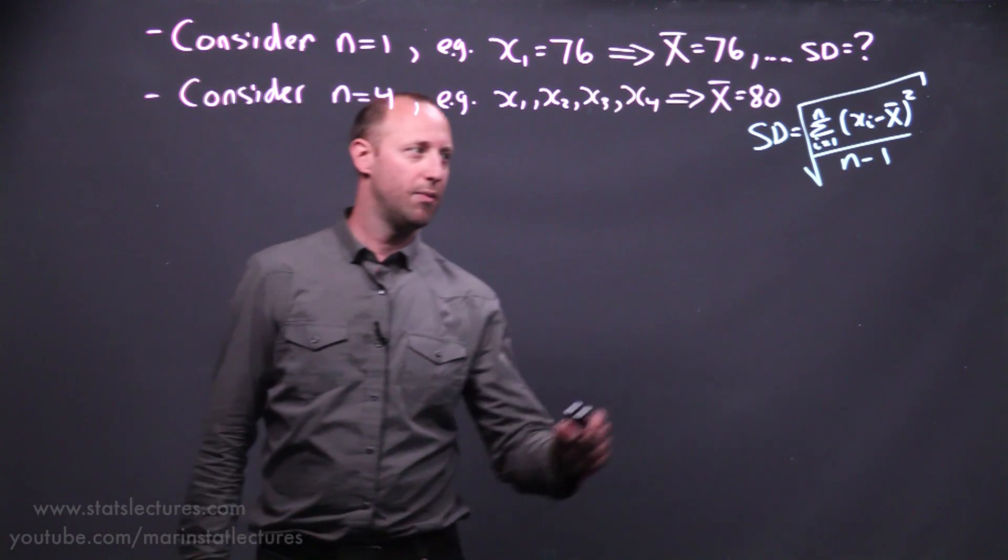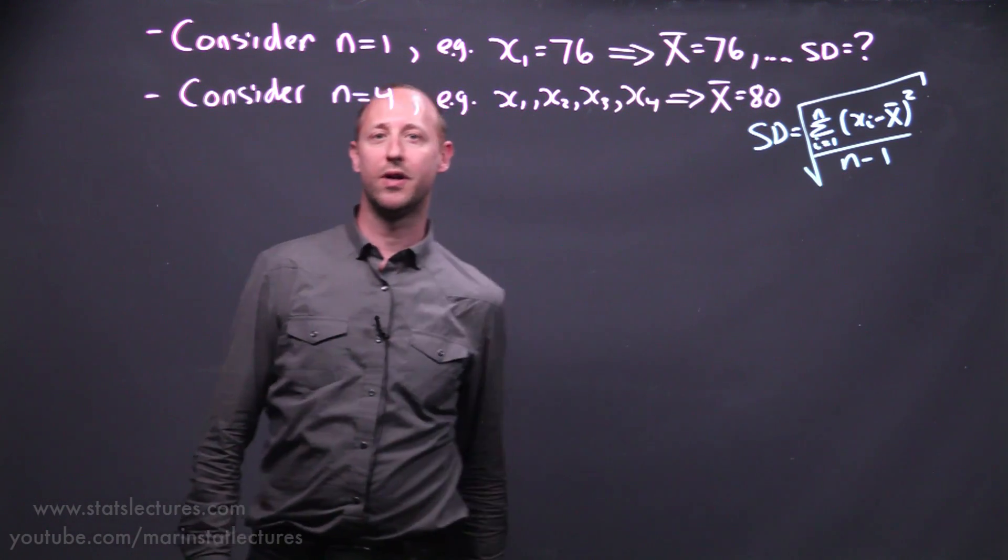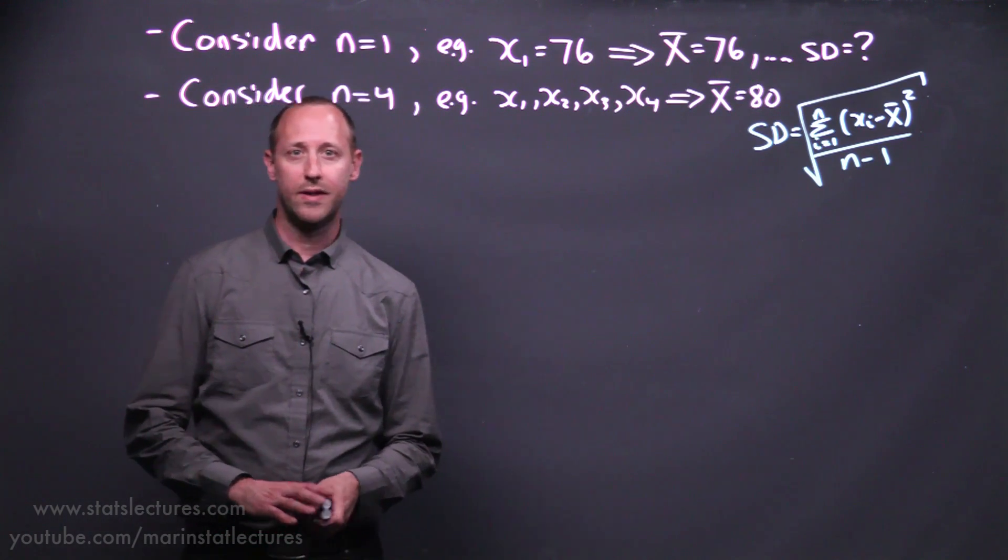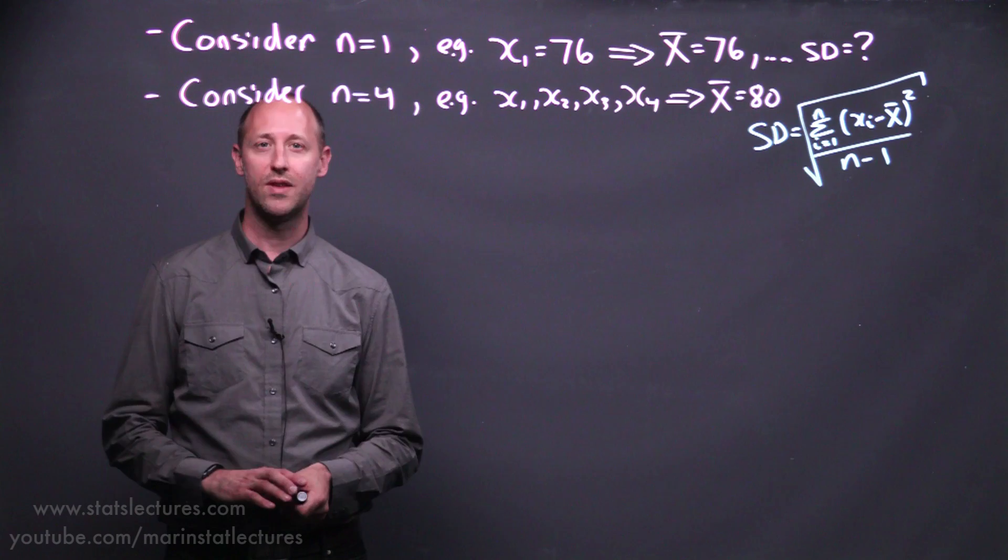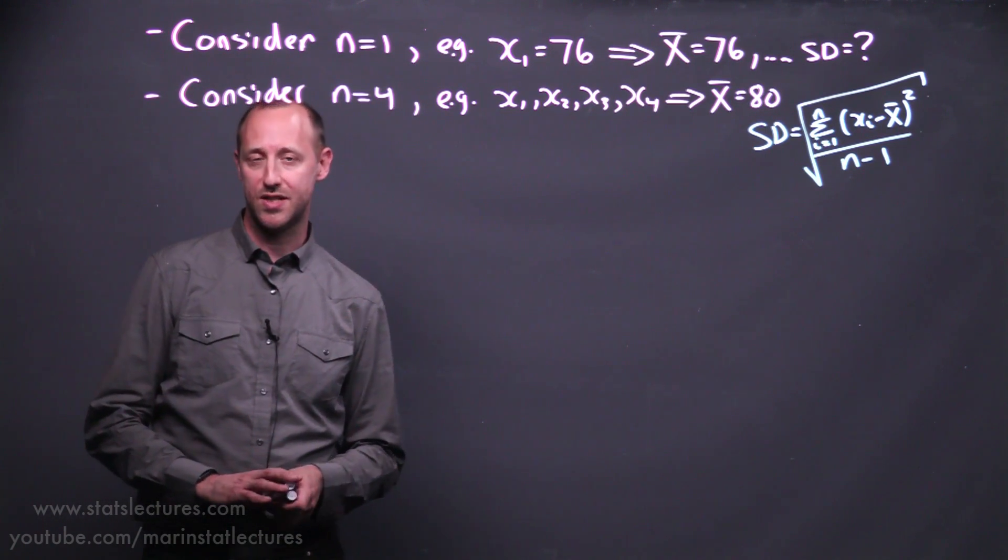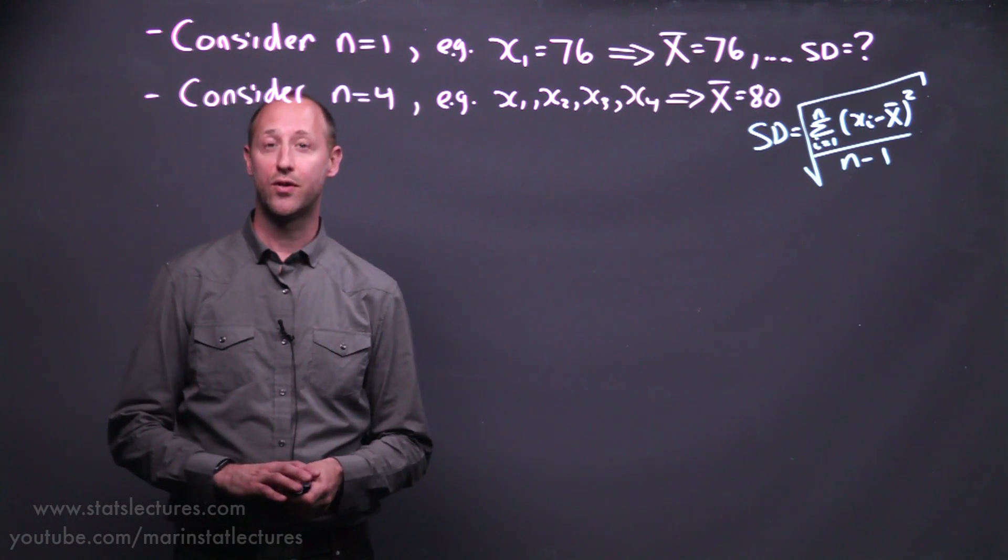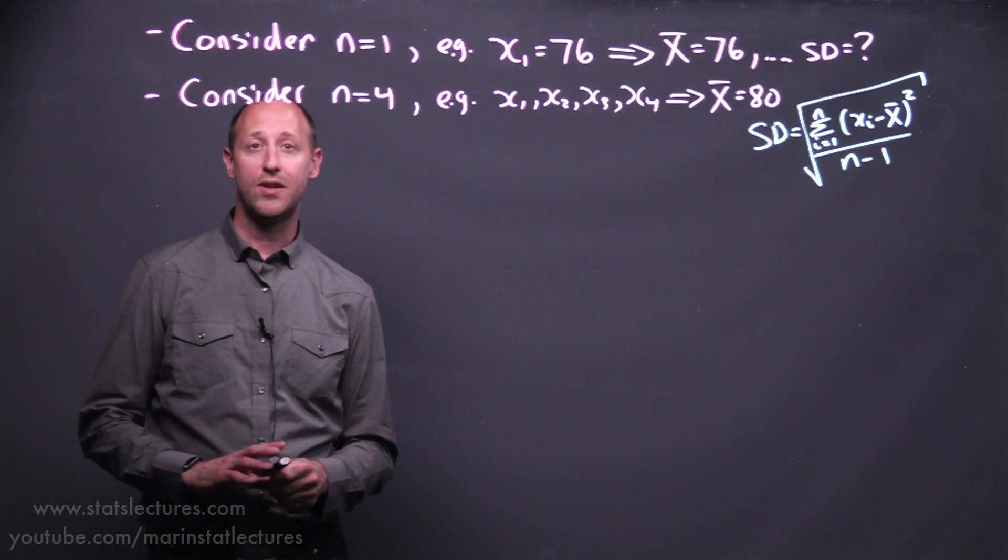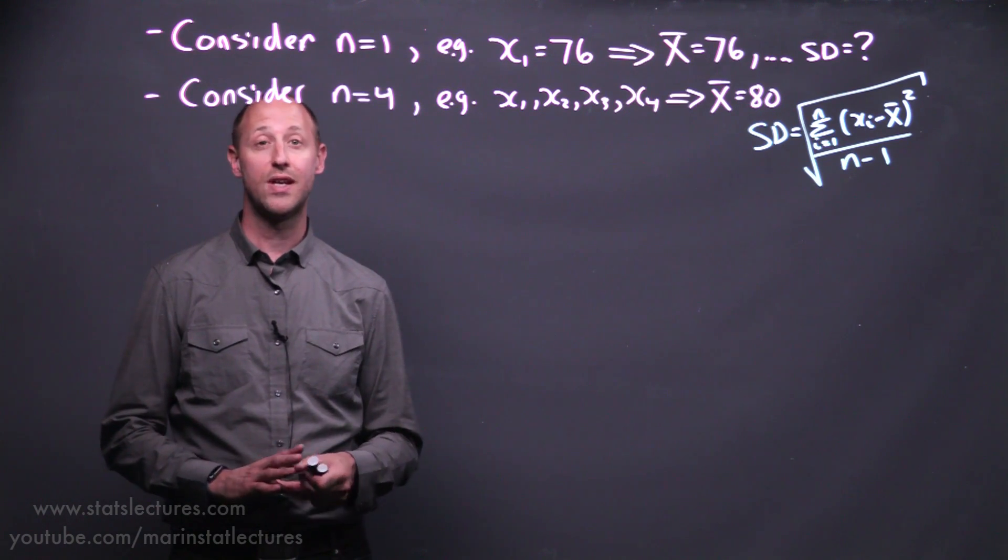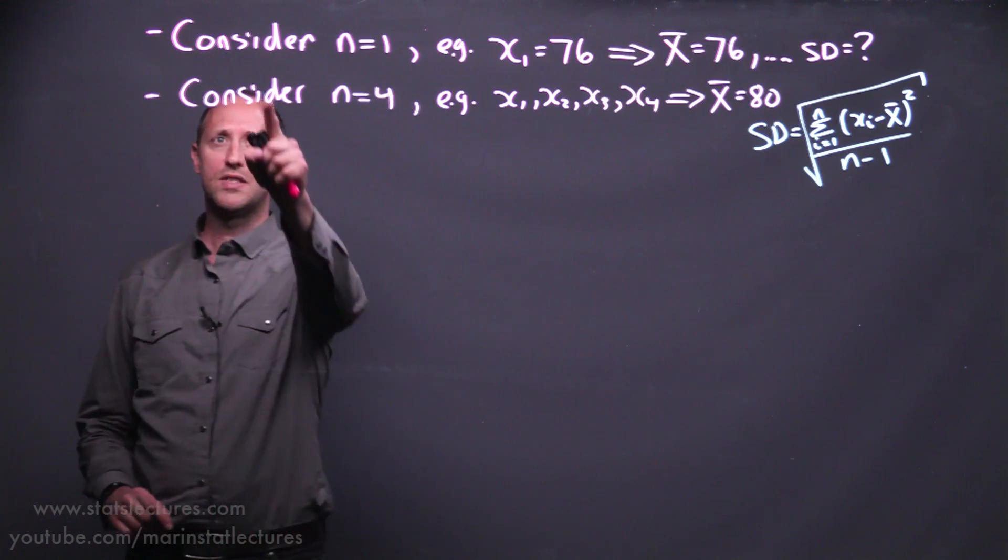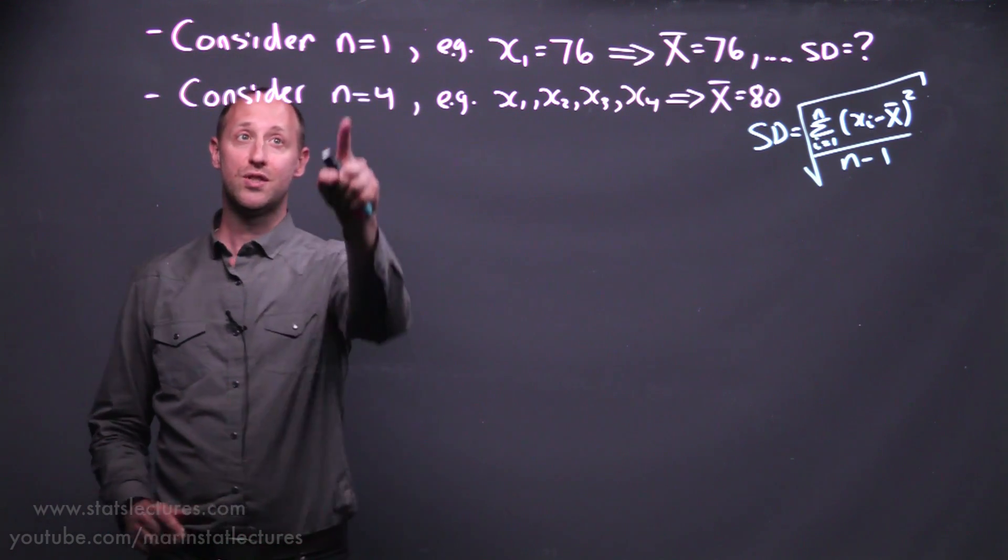So we're going to talk about why do we divide by n-1 here in the calculation of the sample standard deviation. Essentially this has to do with the fact that having n observations, we can think of it as we start with n pieces of information, or n degrees of freedom. And we lose one degree of freedom every time we use our data to estimate something.